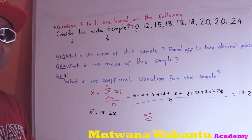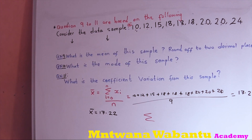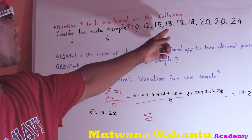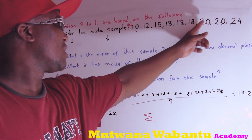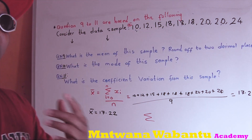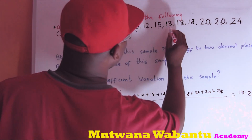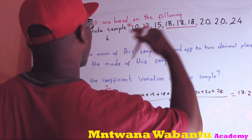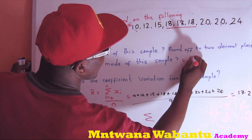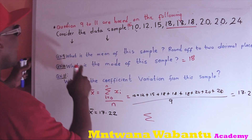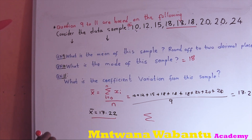Now we go for the mode. The mode is the number which appears the most frequently. So 18 appears three times — first, second, third time. It appears the most. So the mode equals 18. We already have the mean. Now we want to find the coefficient of variation.